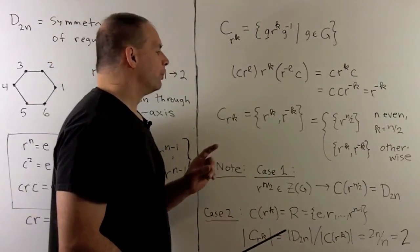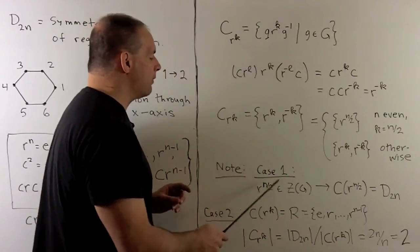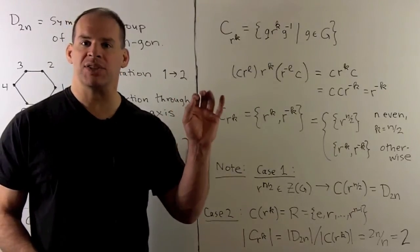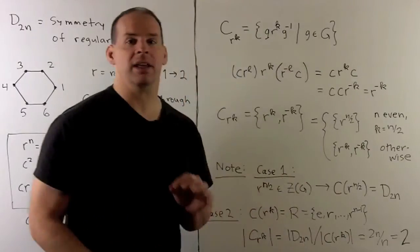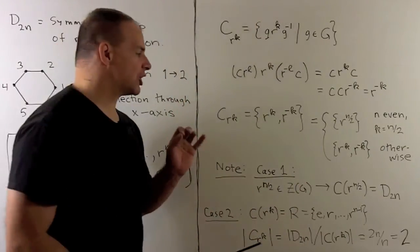For this first case, you can recall, if we have classes that are singletons, then that element has to be in the center. In this case, r to the n over 2 is in the center. It's rotation by 180 degrees, so that checks out. If we're interested in the centralizer, that's going to be the entire group.